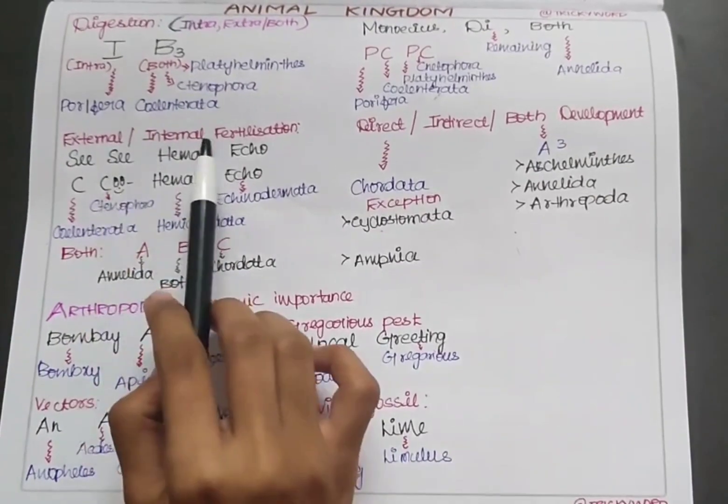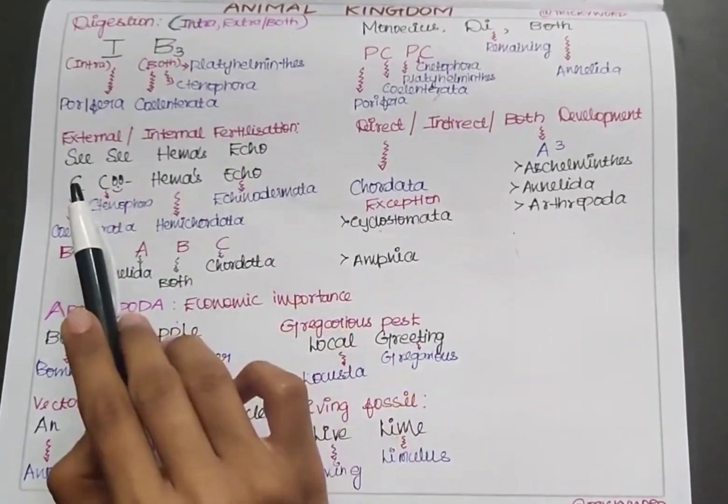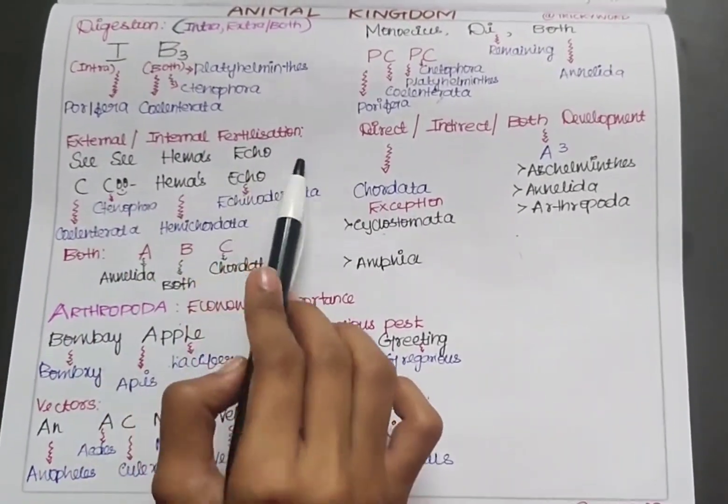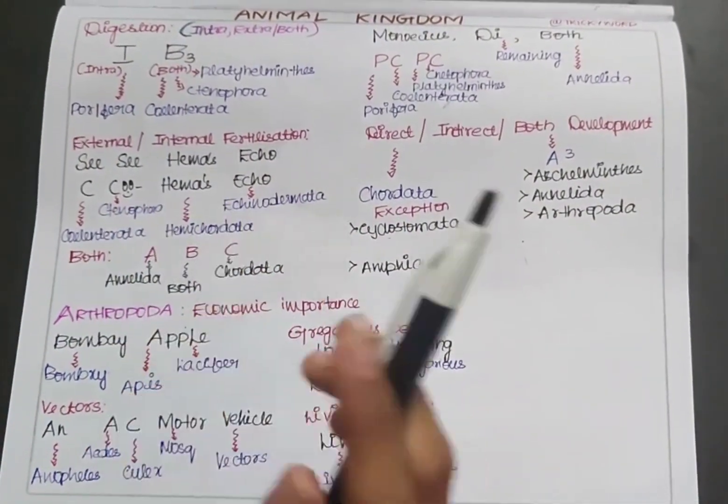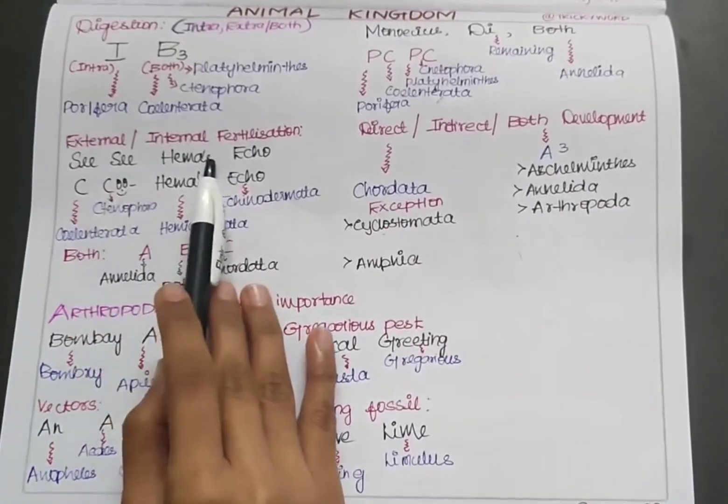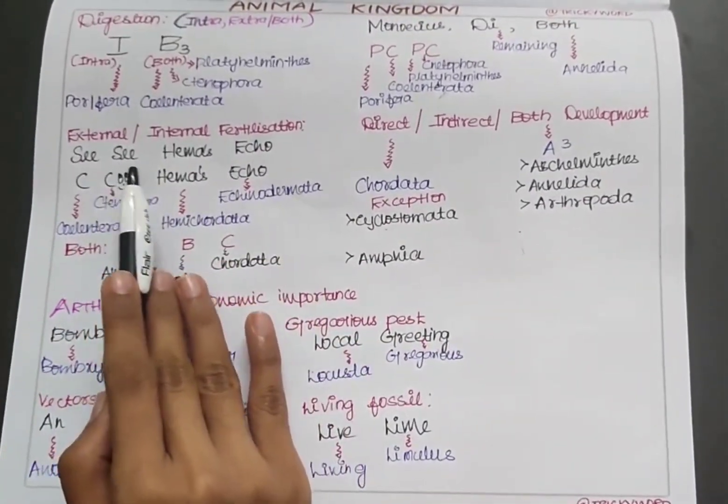Now to identify organisms with external or internal fertilization, the mnemonic is 'CC Hema's Echo'. Imagine your friend's name is Hema and you're asking someone to see her echo. You can memorize it as CC or simply C.